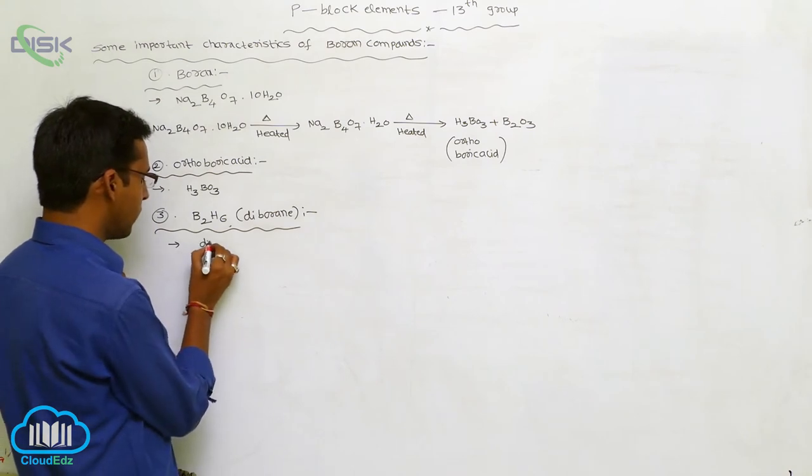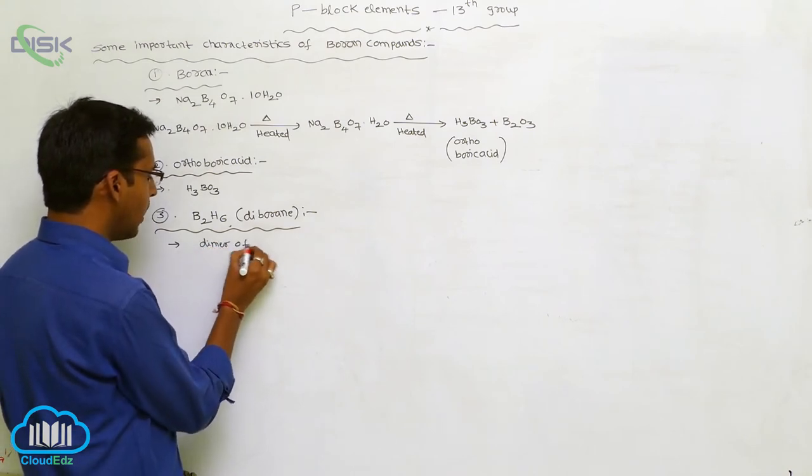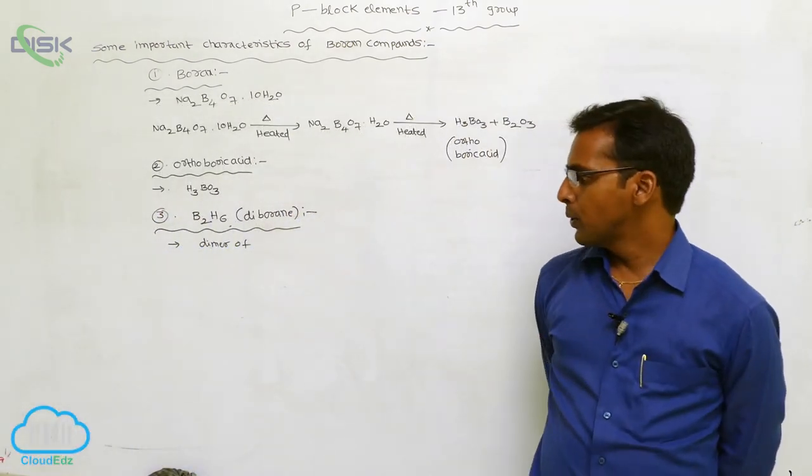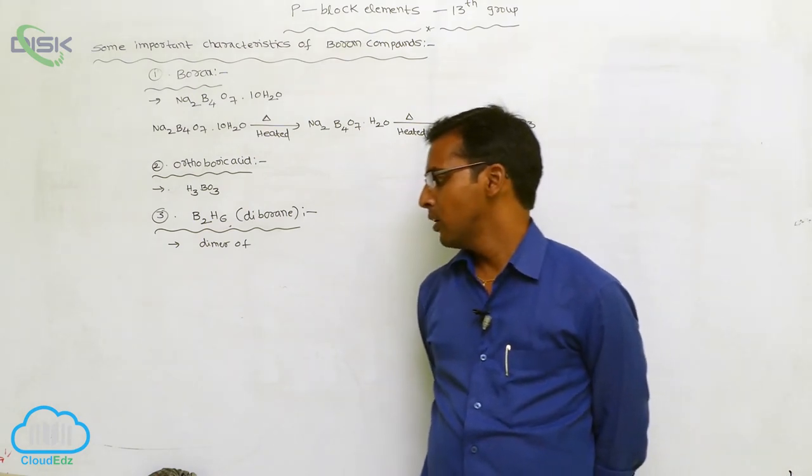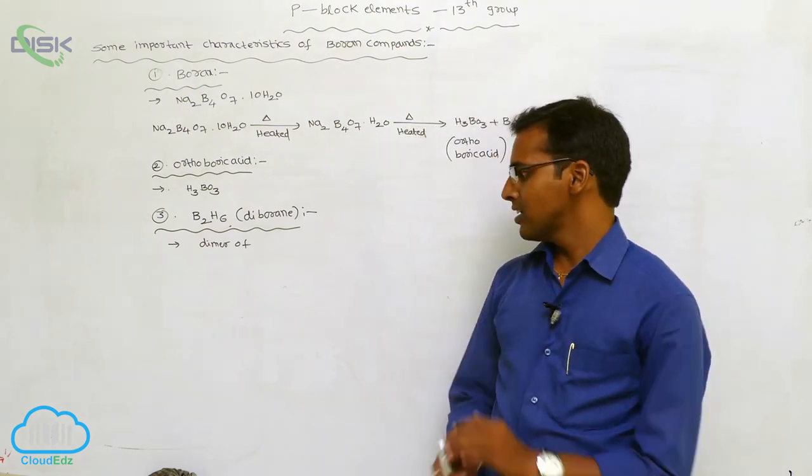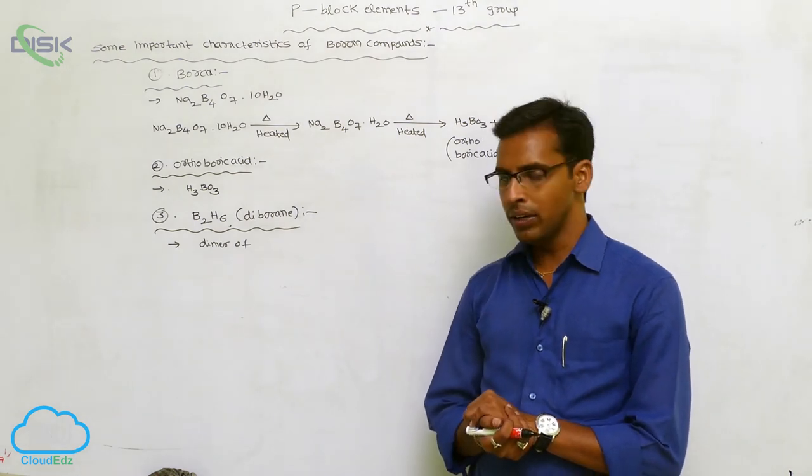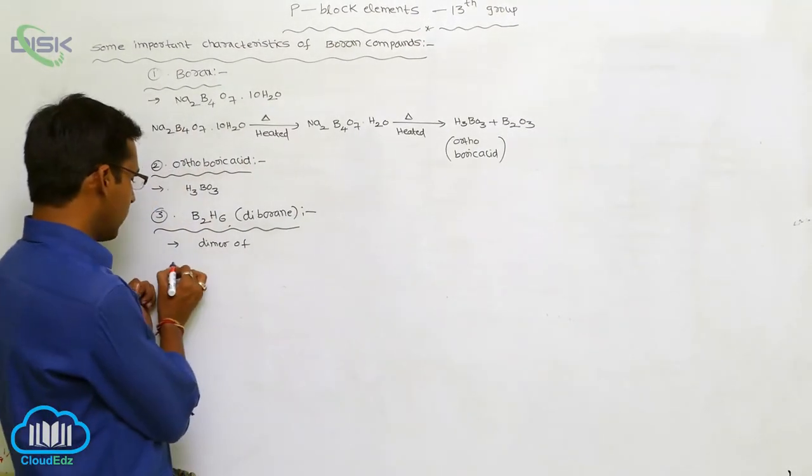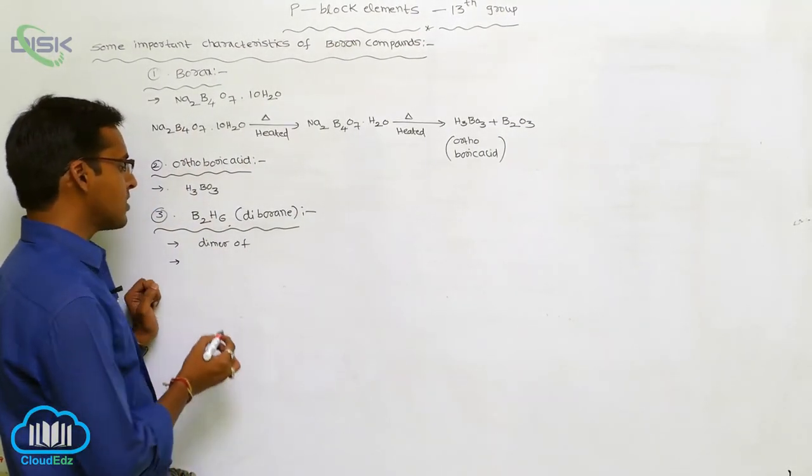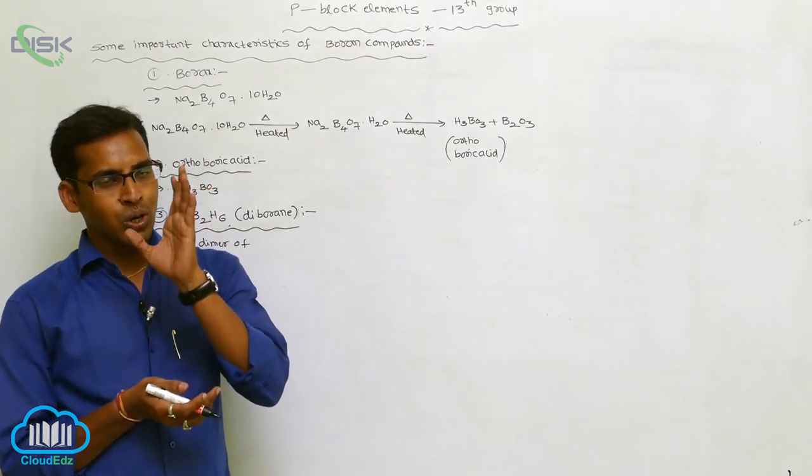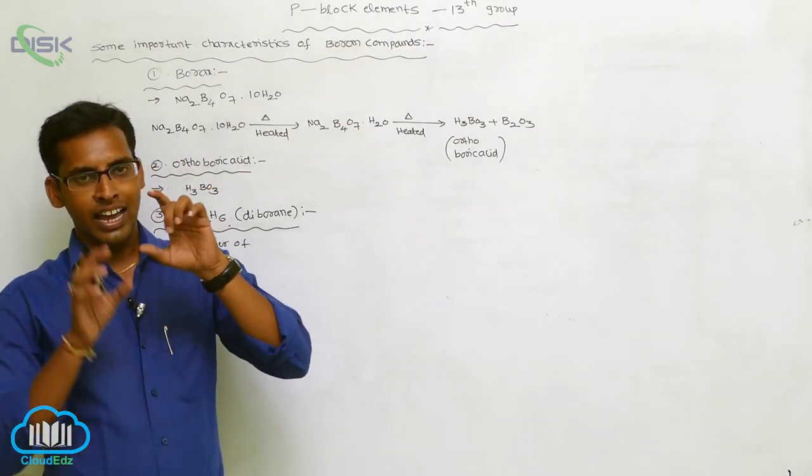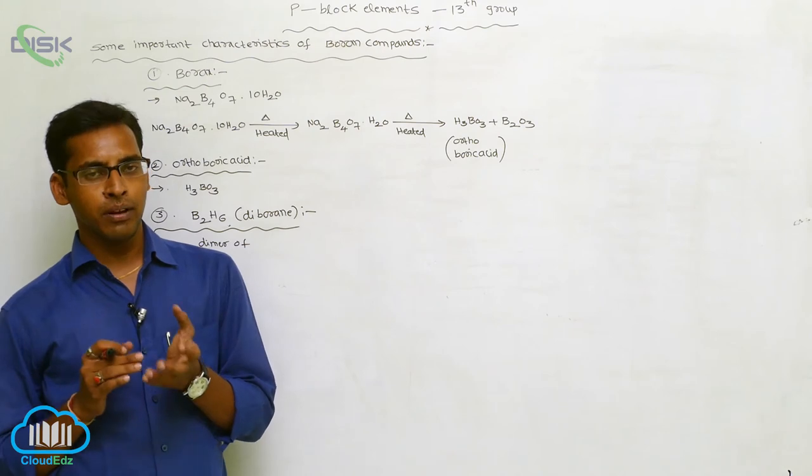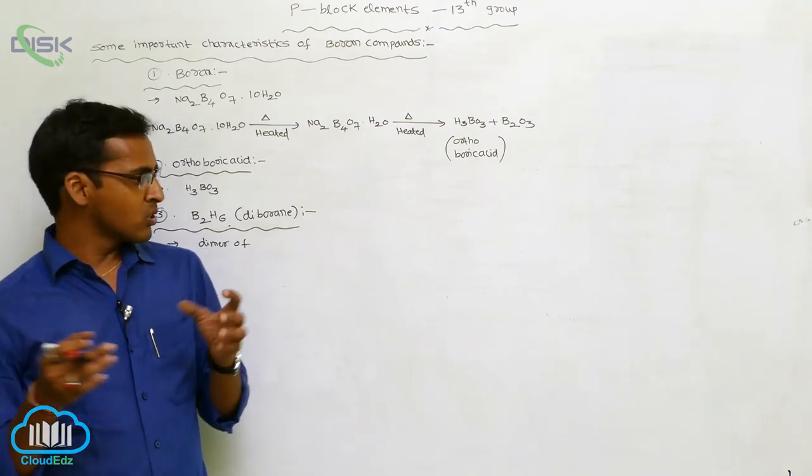This is the dimer form of boron hydride. Generally, the boron hydride is B2H6. Four hydrogens are there. Those four hydrogens are attached to a terminal position. The remaining two hydrogens are above plane and below plane. These are associated together.